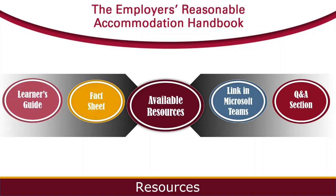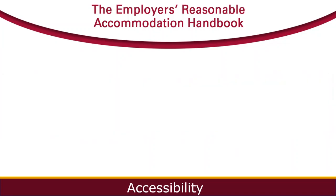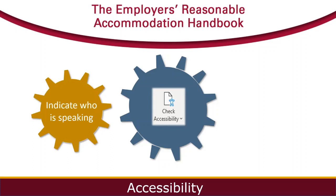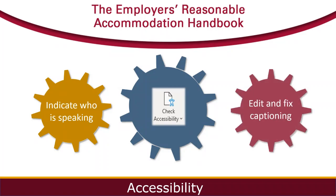Julie, would you like to address the accessibility practices we have included in today's webinar? When we create our training materials, we plan for accessibility upfront. For example, we use the accessibility checker built into Microsoft 365 to review the accessibility of the learner's guide, fact sheet, and PowerPoint. We pay attention to color contrast, font size, and we make sure to add alternative text to any visual images in these materials. Also, in our delivery today, Dustin and I mention each other by name as the conversation goes back and forth, so the audience is aware of who is speaking. This can be helpful when attendees are receiving information through American Sign Language Interpretation and live captioning. After the webinar, we edit the transcript and fix any captioning errors before archiving the webinar in our on-demand library. Taking a few intentional steps upfront can make this presentation more accessible and inclusive for everyone.